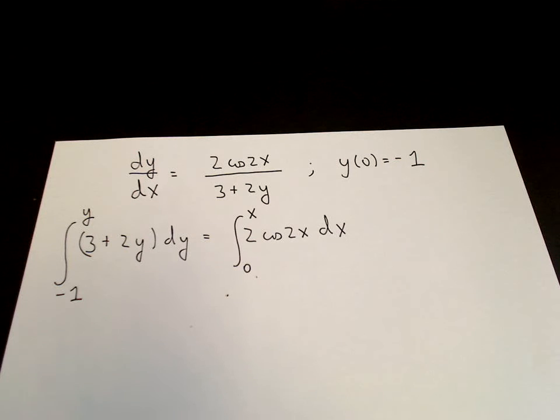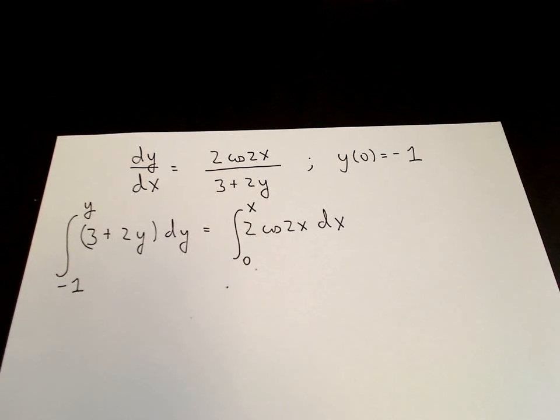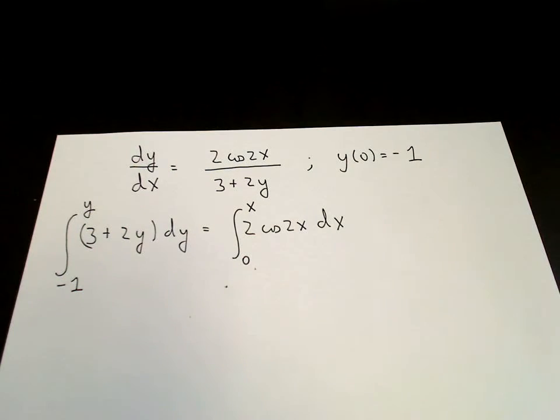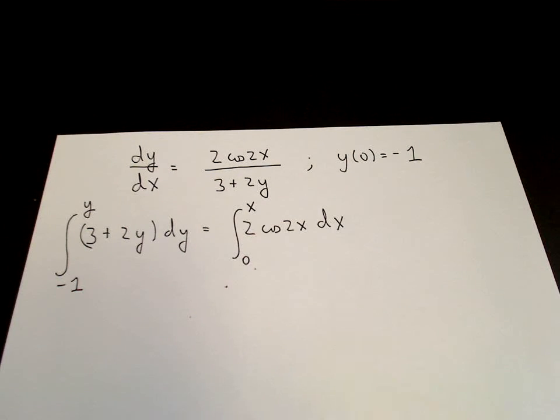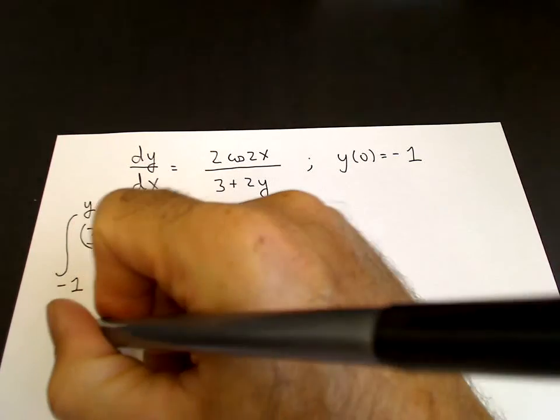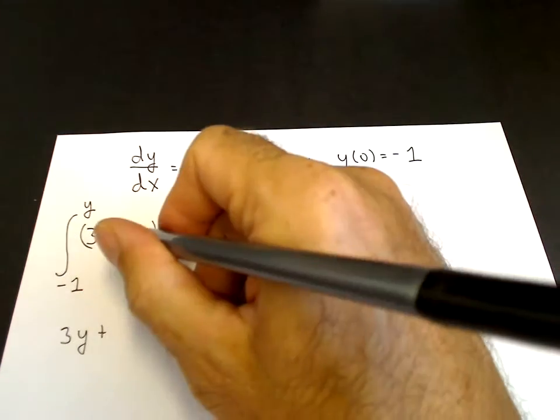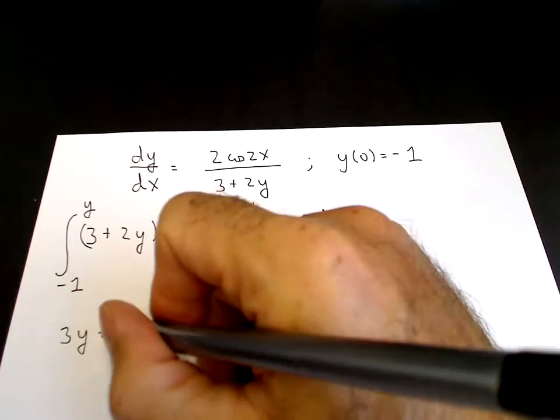When you can do the integral, then you can usually find an analytical solution for y as a function of x. Not always, but usually. So if we go ahead and we integrate, the left-hand side is a polynomial. Very easy to integrate.